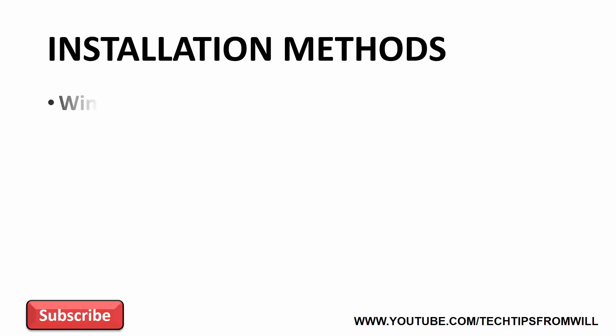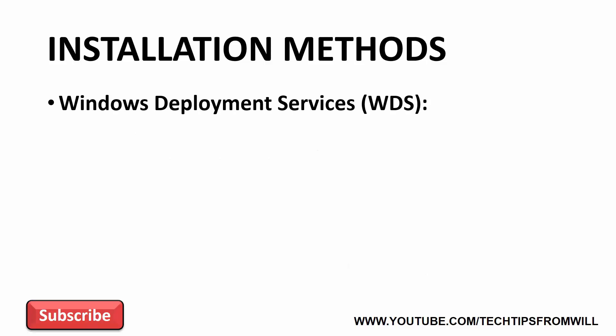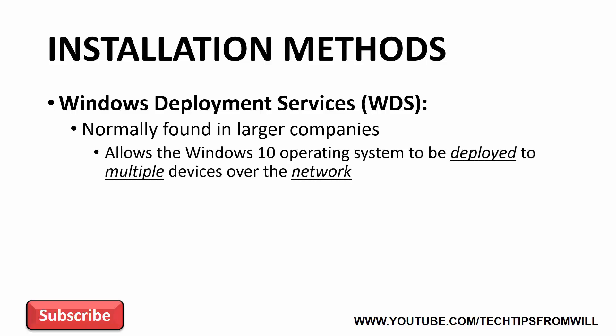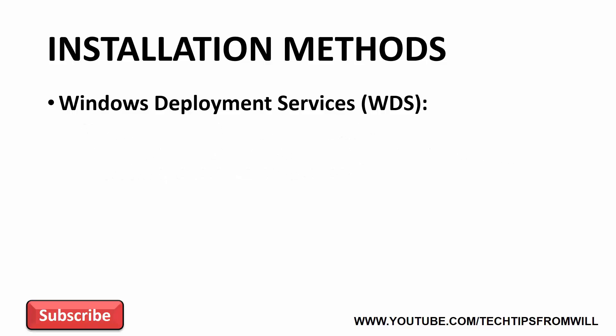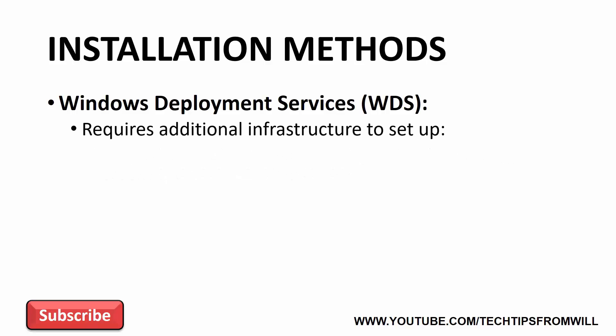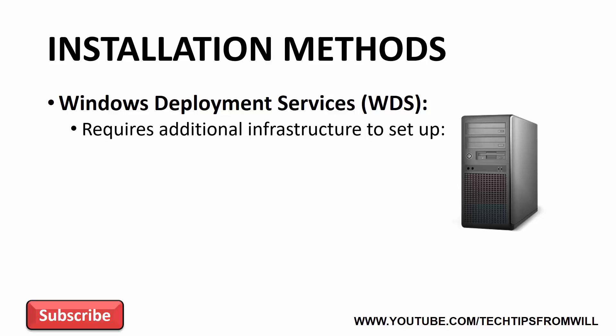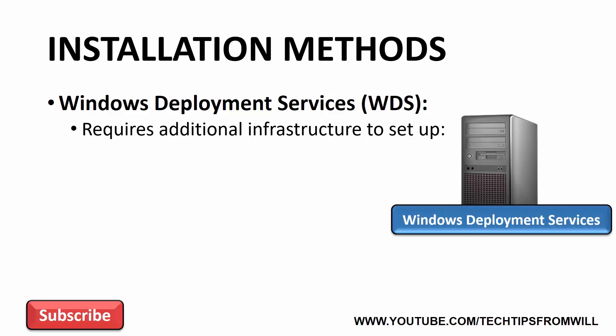The next install method is WDS, or Windows Deployment Services. Windows Deployment Services is an installation method normally found in larger companies. With Windows Deployment Services, the administrator is able to deploy the Windows 10 operating system onto multiple devices over the network. However, Windows Deployment Services does require some additional infrastructure to set up. First, you'll need to deploy a Windows Server, on which the administrator must install the Windows Deployment Services role. Other services required are DNS and DHCP.